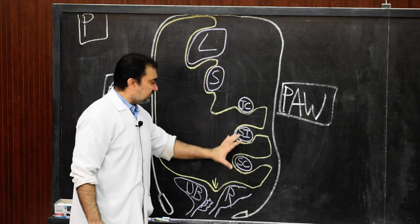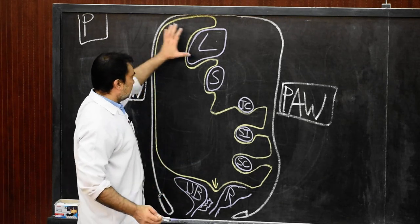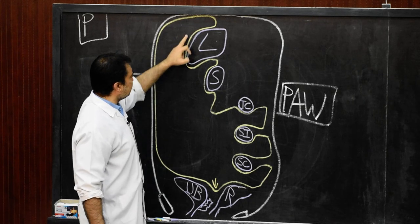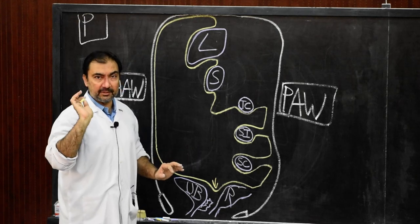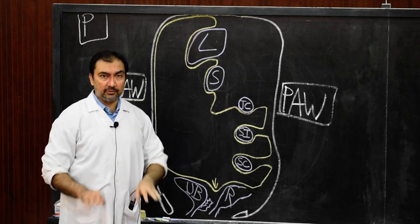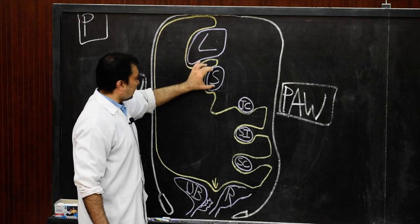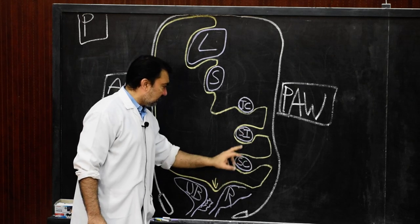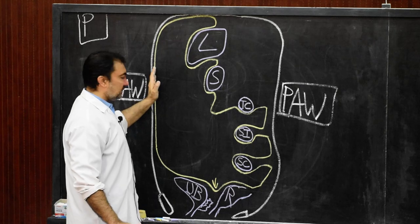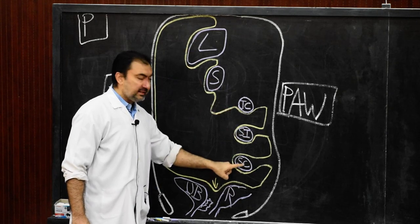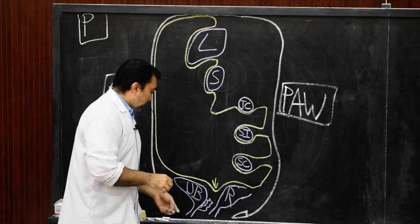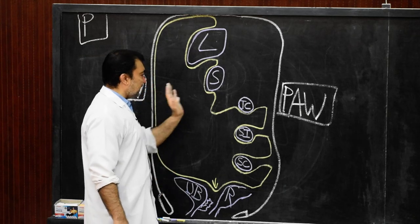This lining is parietal peritoneum covering all the different viscera. Now we come to the visceral peritoneum, which also covers these viscera. The parietal peritoneum, as it is reflected on this viscera, becomes visceral peritoneum. When it covers the viscera — liver, stomach, transverse colon, sigmoid colon, and small intestine — it will be known as visceral peritoneum. The same parietal peritoneum is reflected on the viscera as visceral peritoneum.